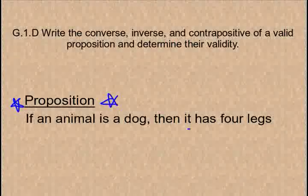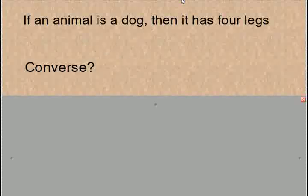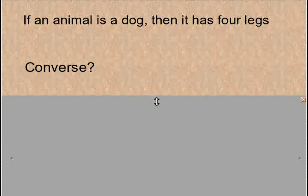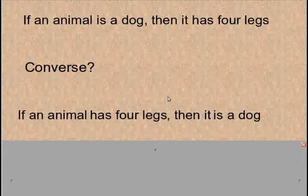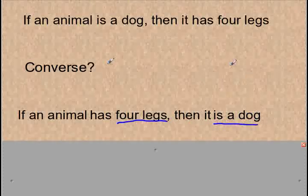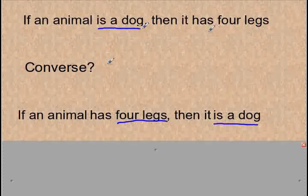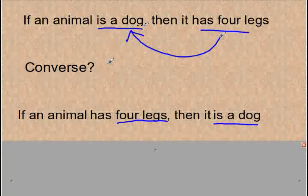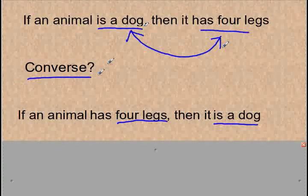The first one is the converse. If an animal is a dog, then it has four legs — the converse of that would be: If an animal has four legs, then it is a dog. We take what's in the if part and what's in the then part and flip-flop them. That is how we get the converse — we switch the if and the then parts.